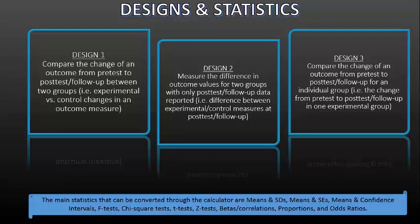The main statistics that we can use to be converted through the calculator are means and standard deviations, means and standard errors, means and confidence intervals, F tests, chi-squared tests, T tests, Z tests, basic correlations, proportions, and odds ratios. So, as you can see, there's a wide range of statistics, raw data like means and proportions, then some more advanced analyses like F tests and chi-squared tests.